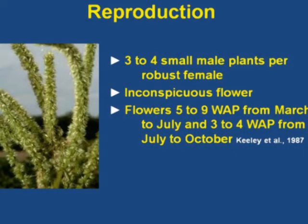Most people would think the female plant is the soft, cuddly one — but you're wrong. The male is the little soft one. The female has those stiff bracts when you're walking through — they cause you problems. When they flower, there are generally three or four males around one big female. The flowers are inconspicuous, and about two weeks after pollination occurs, you've got viable seed. They flower about five to nine weeks after planting in March to July, and about three to four days after emergence in the later part of the year.